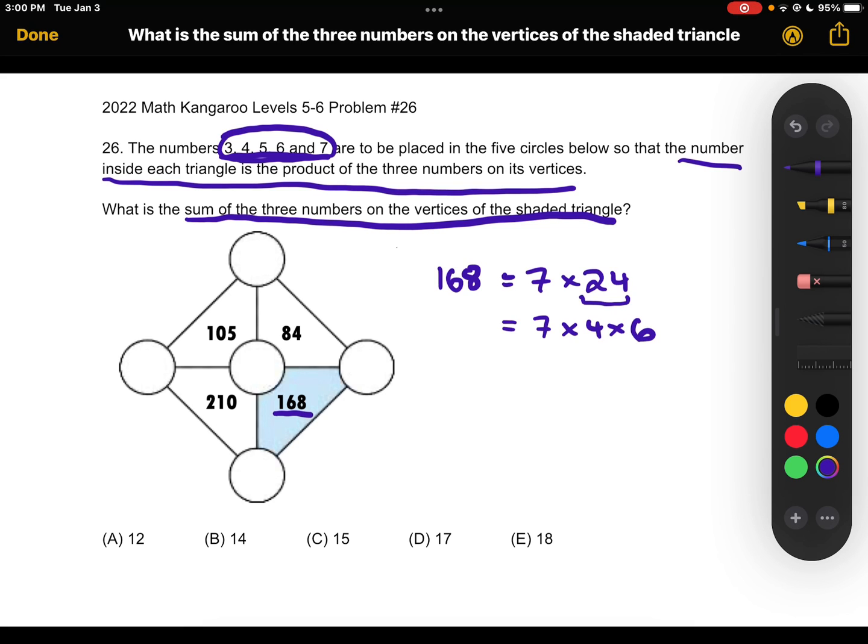So the three numbers out of the ones that we are given that will multiply to 168 are 7, 4, and 6 and we want to find the sum of these three numbers. So 7 plus 4 plus 6 is equal to 17.